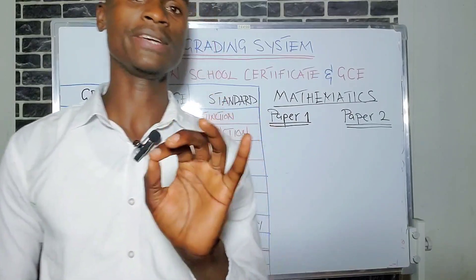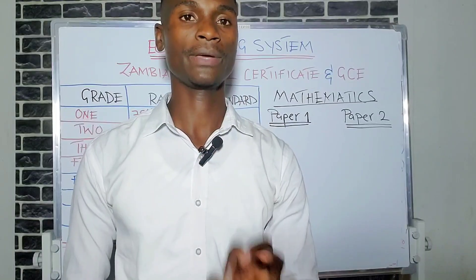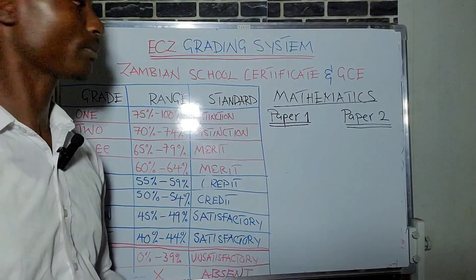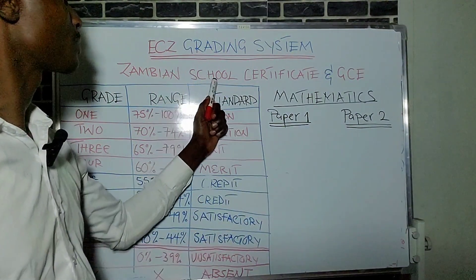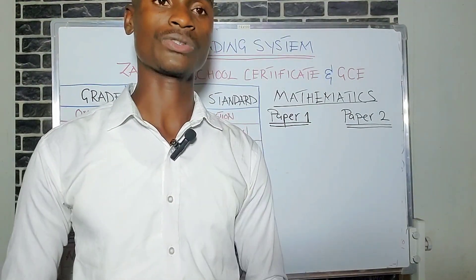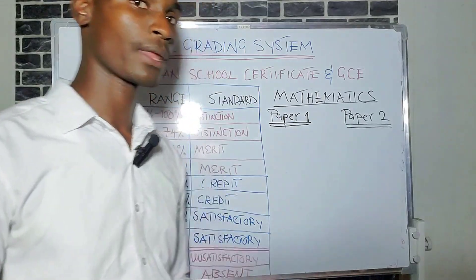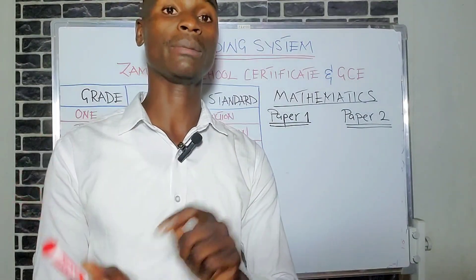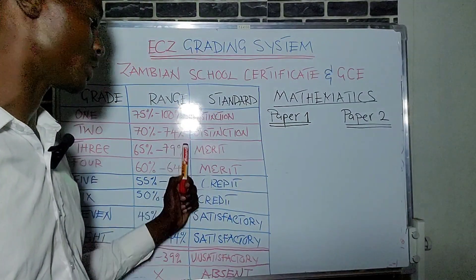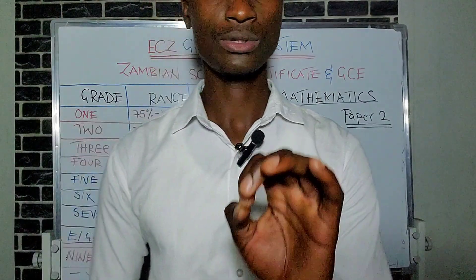Good morning, good afternoon, good evening — whenever and wherever you're watching from, welcome to No Stake Academy. In this video I'm going to explain the ECZ grading system for the Zambian School Certificate and the GCE, which stands for the General Certificate of Education. I'll also explain how many marks you need in both Paper 1 and Paper 2 to get a Distinction 1 or Distinction 2.